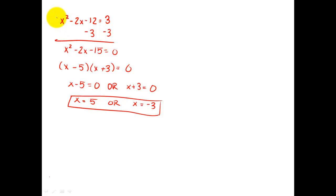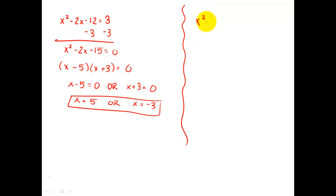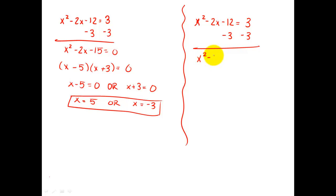Remember back in the day when we were solving quadratic equalities and we had x squared minus 2x minus 12 equals 3? Remember how we set it equal to zero so that we could factor it and then set each of the factors equal to zero? That only worked when two things multiplied together equaled zero. We're going to be talking about that in this lesson except we're dealing with inequalities, but the rules are pretty much the same. First you set it equal to zero, then you factor it. I started with x squared minus 2x minus 12 equals 3 and subtracted three from both sides.